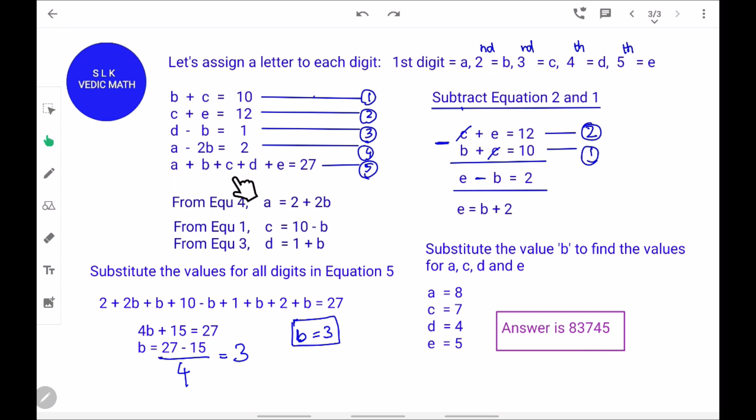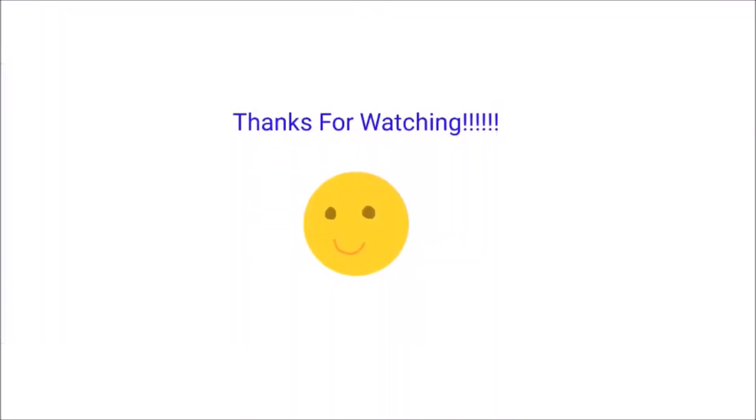It says A plus B plus C plus D plus E should equal to 27. 8 plus 3 is 11, 11 plus 7 is 18, 18 plus 4 is 22, and 22 plus 5 is 27. Thanks for watching.